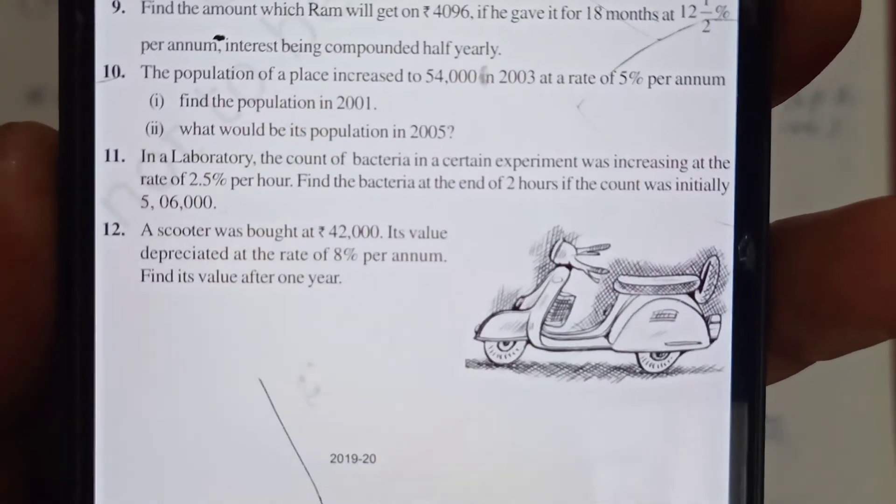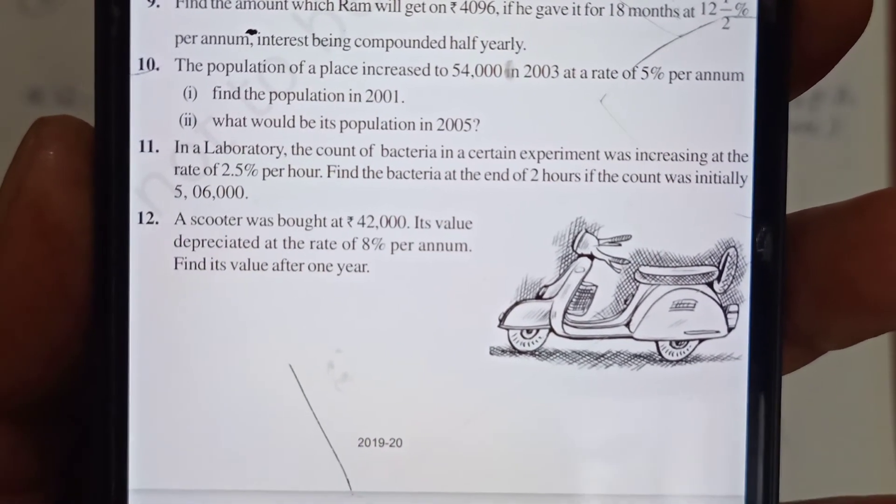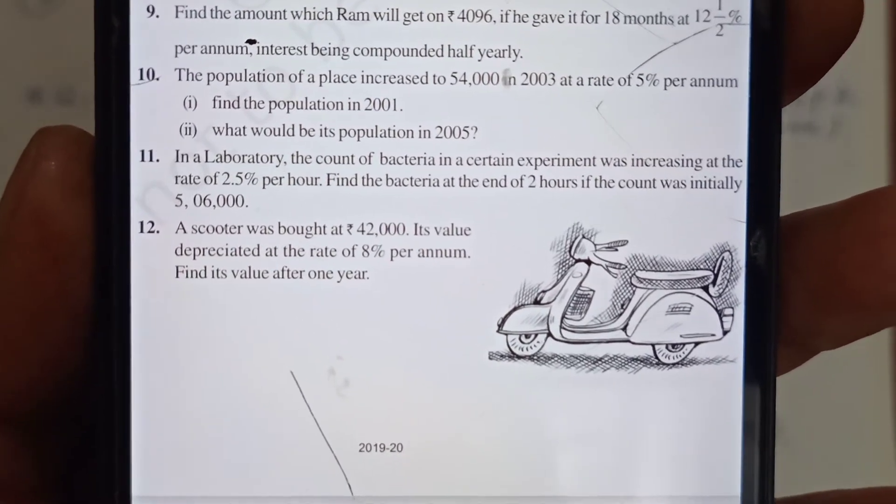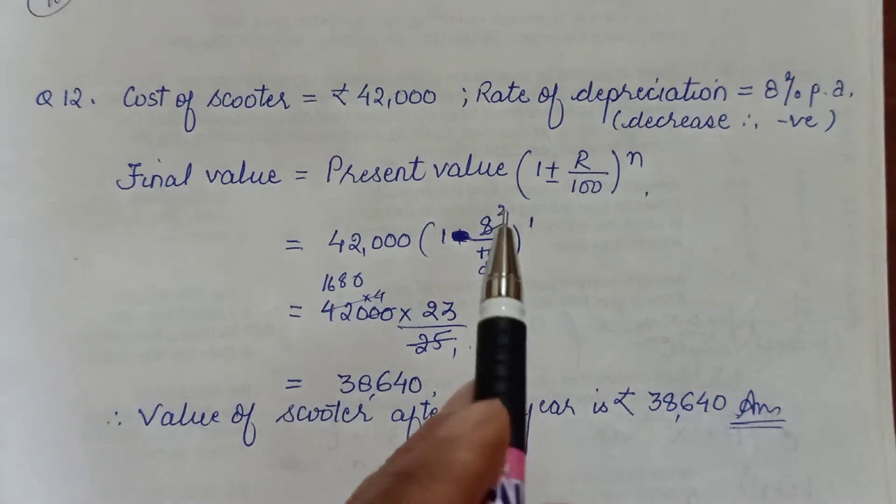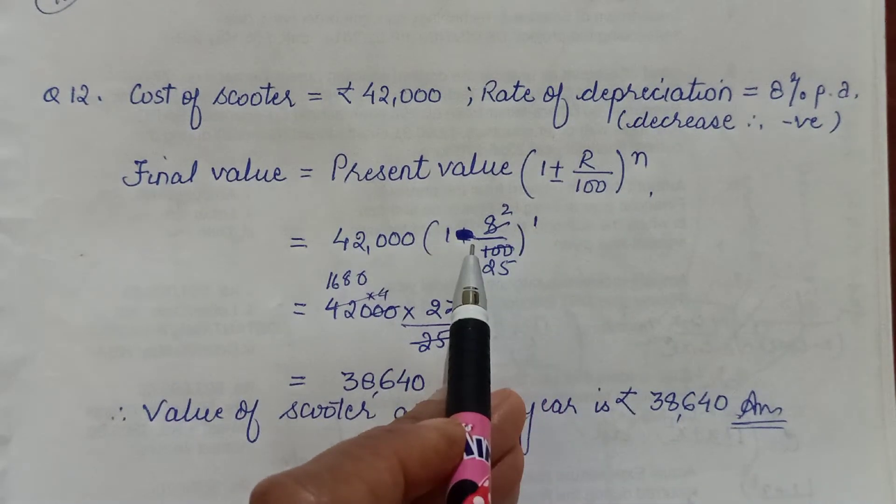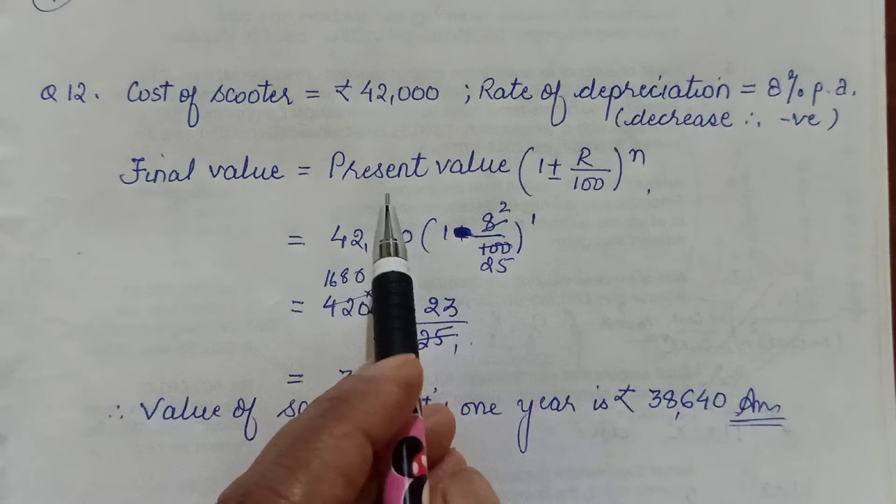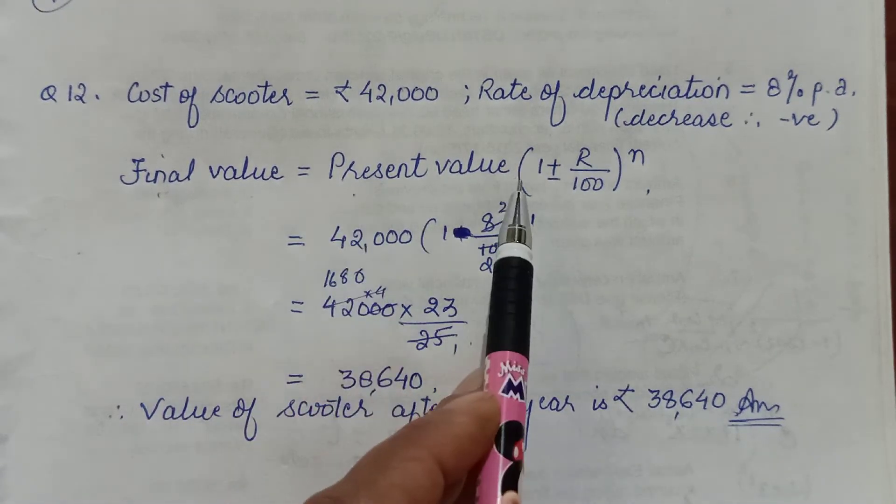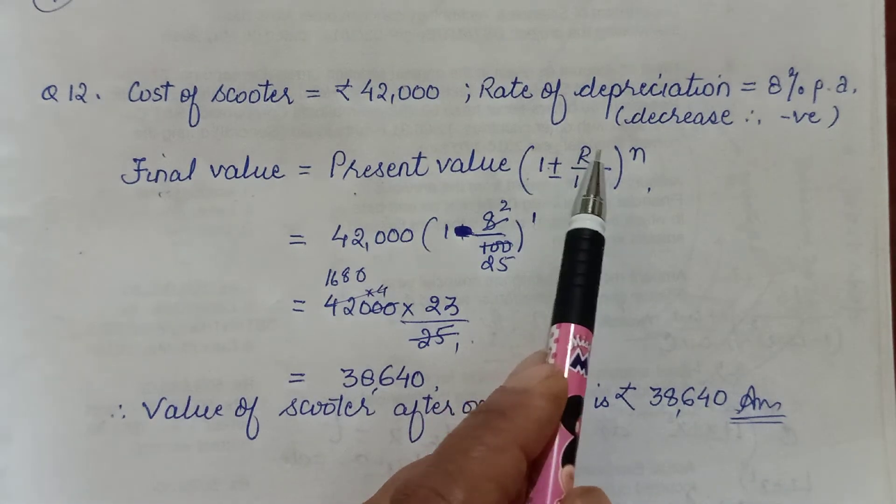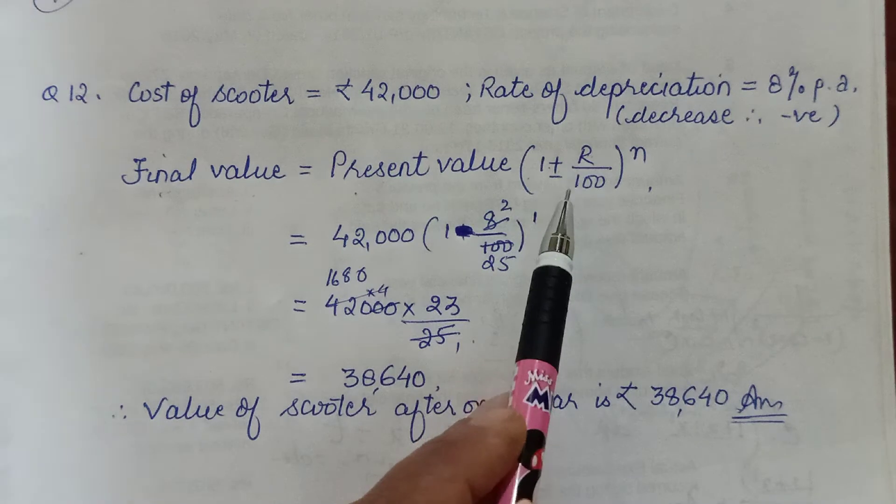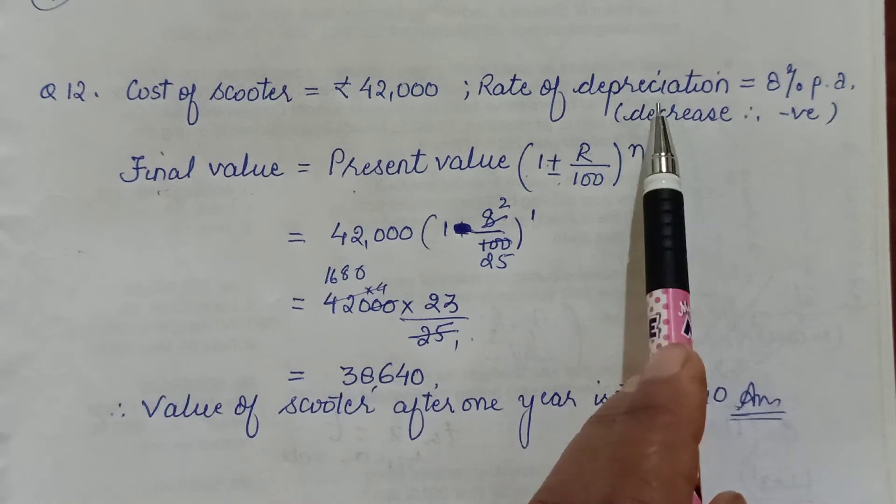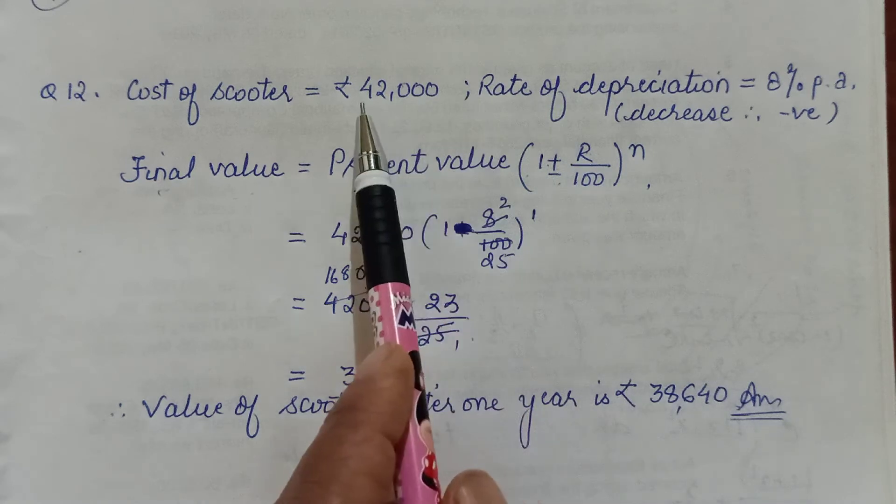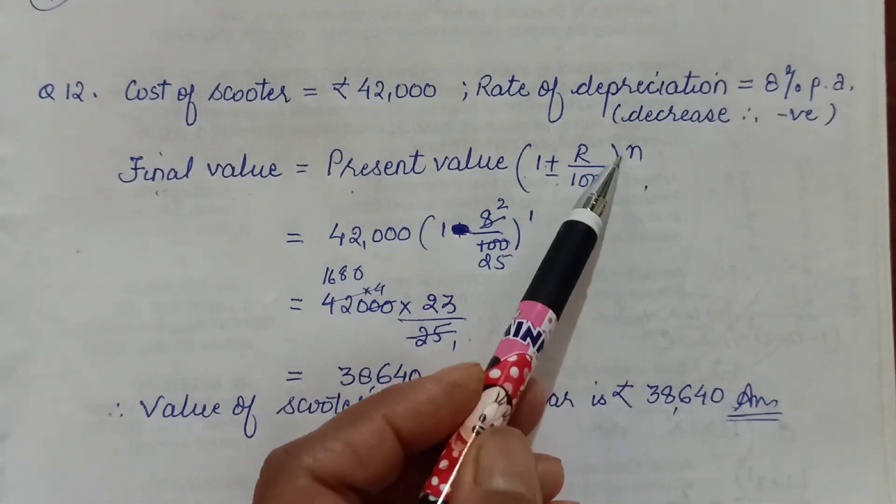Last one: A scooter was bought for ₹42,000. Its value depreciates at the rate of 8% per annum. Find the value after one year. When depreciation happens, there is a decrease, so the rate in the formula becomes negative. The final value will be present value × (1 - R/100)^n. If there was increase, plus R; if decrease or depreciation, minus R. Rate is 8%, depreciation means decrease, so we take negative. After one year, n = 1.